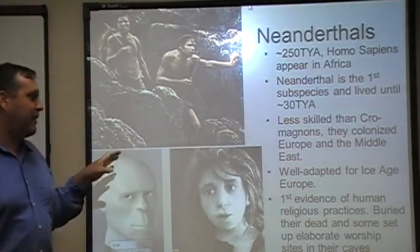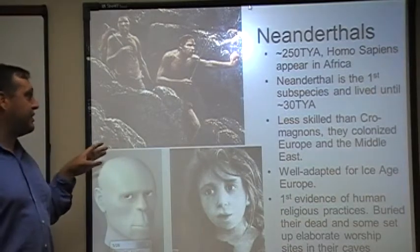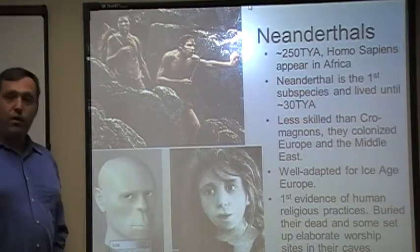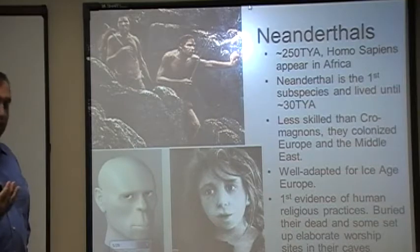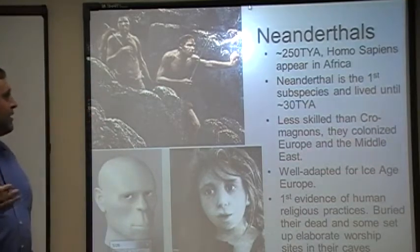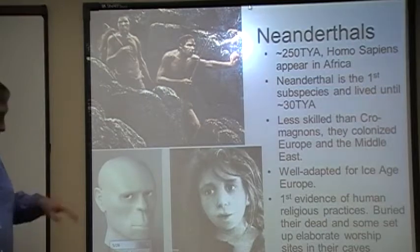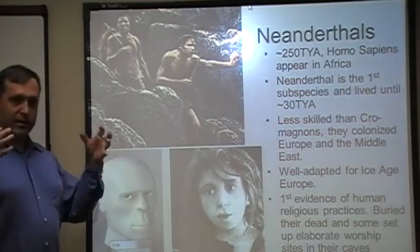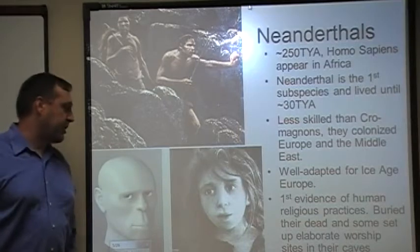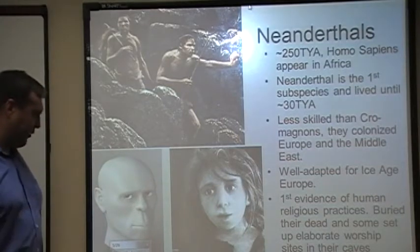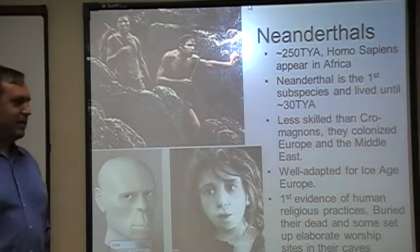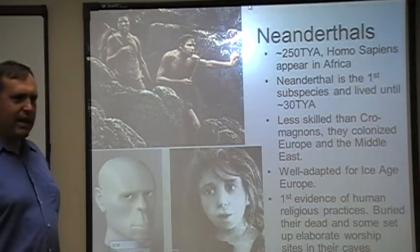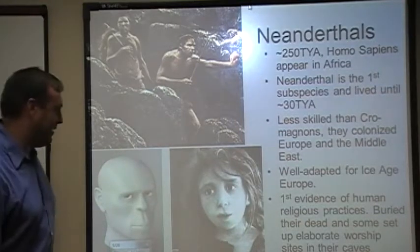These guys are going to be pretty well adapted for a series of ice ages that grip Europe. We're also going to find our first evidence of human religious practices with the burial of their dead, and some seem to have set up pretty elaborate worship sites in their caves. You can find in the photos some depictions of what they may look like — here's one of a Neanderthal with its skull structure visible. You know, you might look at a guy like that on a bus and think 'whoa,' but there's a child, and you'd look at that and go, it looks like a kid, something maybe a little different, but nothing too crazy.